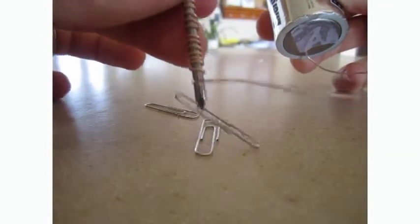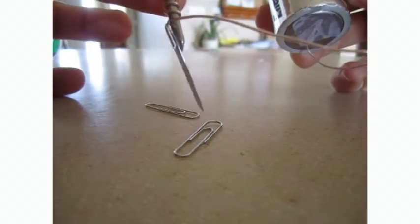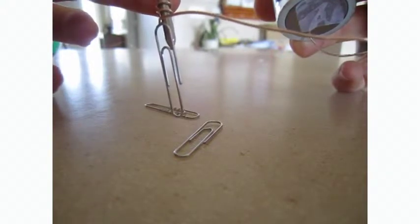But first of all, what is an electromagnet? Well, an electromagnet is a piece of metal that becomes magnetic when you flow electricity around it.